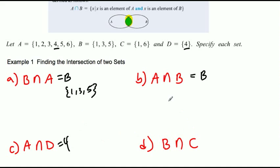And the intersection of B and C. So here's B and here's C. Well, they have one in common and that's it. There's no six. So they have a one in common. And that's how you find the intersection of two sets.